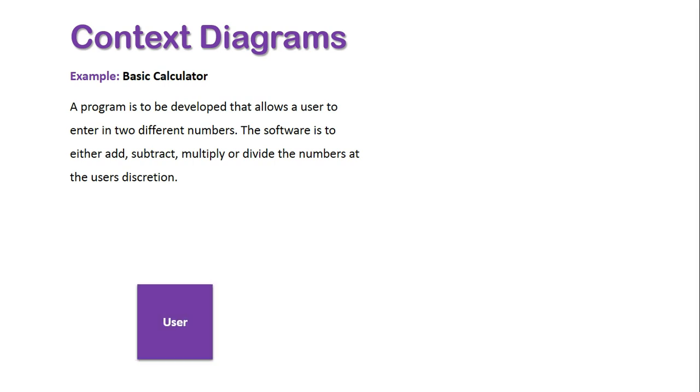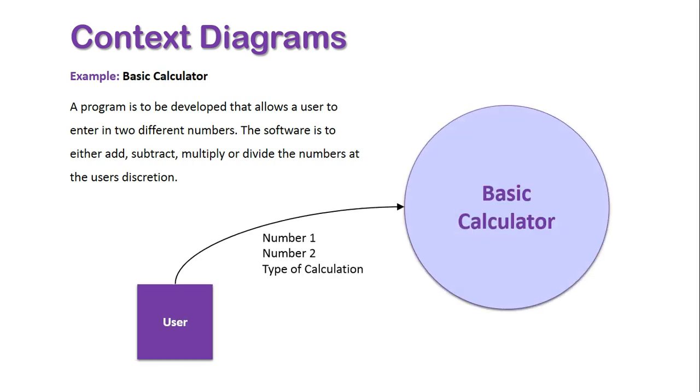We have a user. This user is going to input into the system number one, number two, and the type of calculation into the calculator program. Essentially, by implementing these things, what do we want the user to get back? Obviously, the information they get back is the result of the calculation.